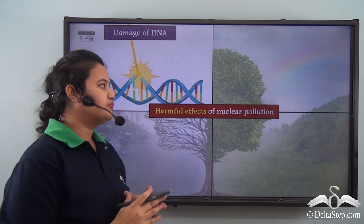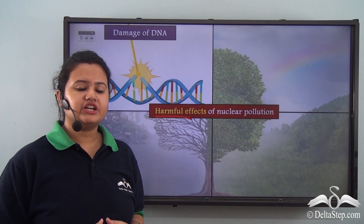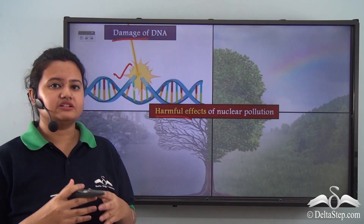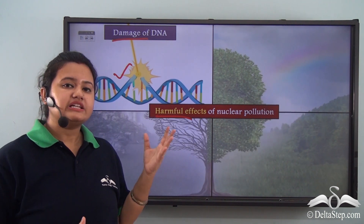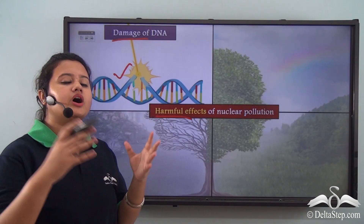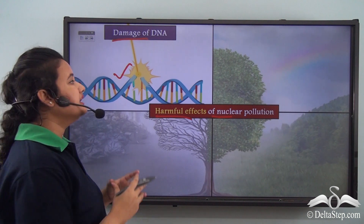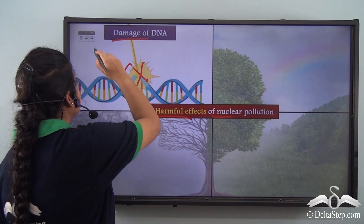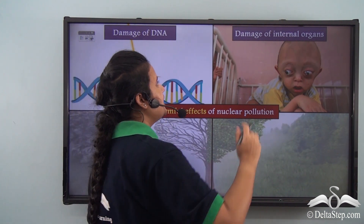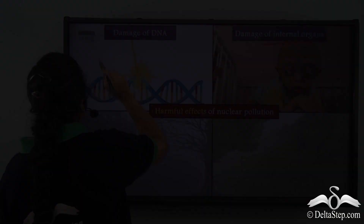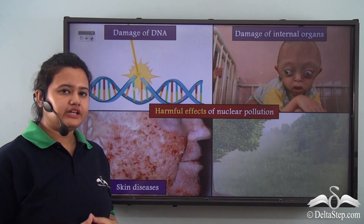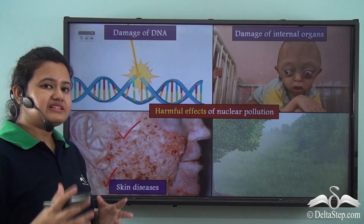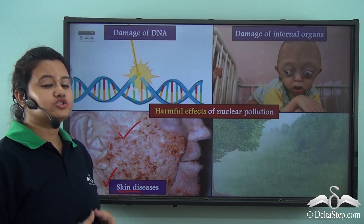Let us discuss other harmful effects of nuclear pollution. Nuclear radiations are indeed very harmful and they can break the chains of DNA. Damage of DNA can in turn lead to various genetic disorders, because DNA is an important part of the gene. The radiations can also enter human bodies and damage internal organs. Long exposure to toxic nuclear radiations may lead to various skin diseases.